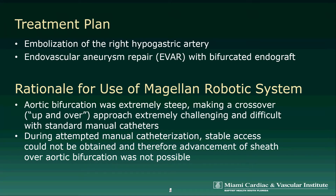Our treatment plan for this patient was embolization of the right hypogastric artery, followed by EVAR, or endovascular aneurysm repair, with a bifurcated endograft, which would treat the patient's small aortic aneurysm as well as the bilateral common iliac artery aneurysms.